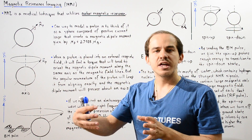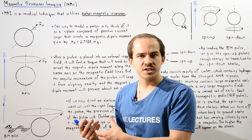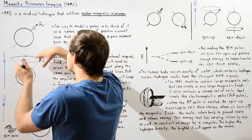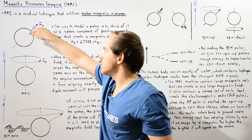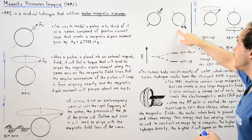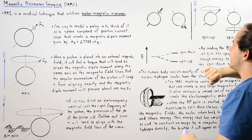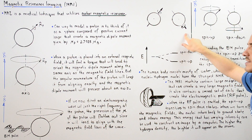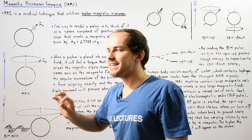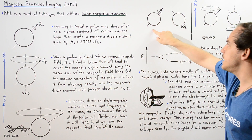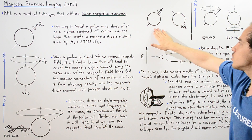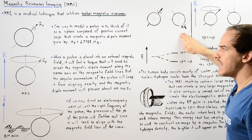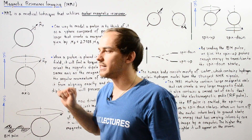There are two ways that the positive charge of a proton can spin. The charge can spin one way, creating a magnetic dipole moment pointing in one direction — this is spin up — or it can spin the other way, with the magnetic dipole moment pointing downward — this is spin down. If there is no magnetic field present, the energies of these two spin states are exactly the same.